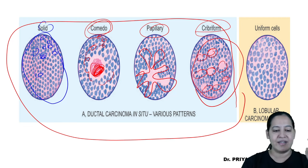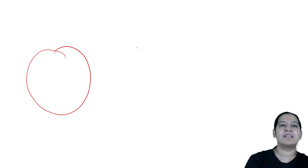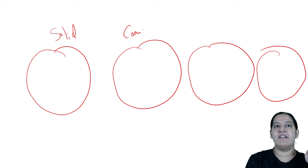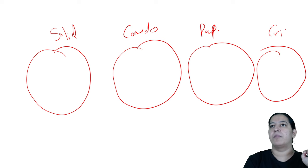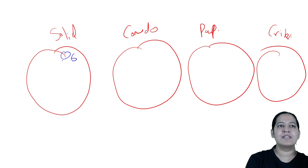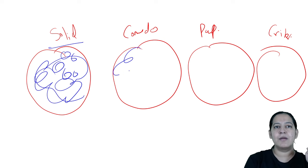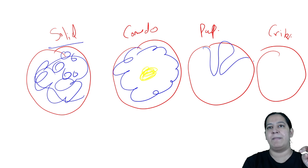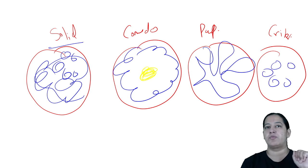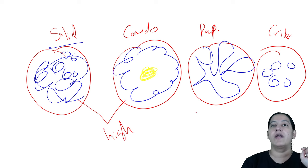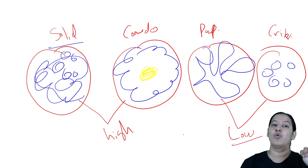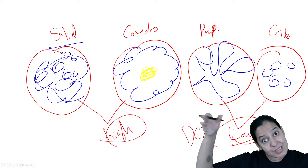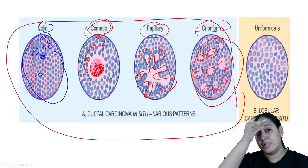So the four patterns of DCIS are: solid, comedo, papillary, and cribriform. Out of these four, the first two — solid and comedo — are high grade. Papillary and cribriform are low grade. So DCIS is of two types: high grade DCIS and low grade DCIS. In each of these four patterns, tumor cells are within the duct — they are not coming out into the stroma. That is why it is known as in-situ. But it is inside the duct, so it is ductal.